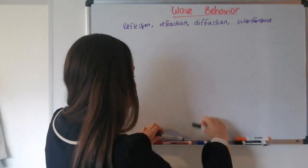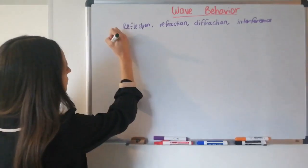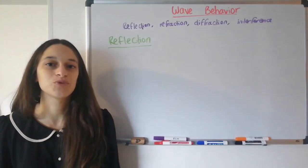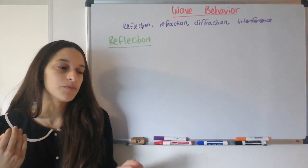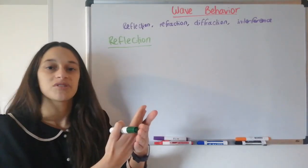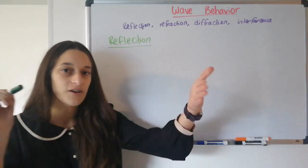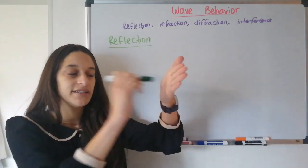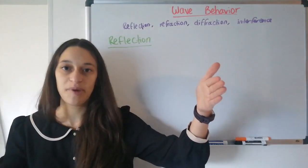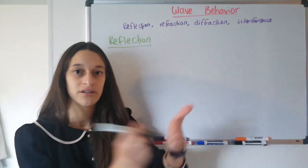Let's start with reflection. Reflection is when a wave hits an obstacle and rebounds from it. It can either hit the obstacle perpendicularly, and that means it will rebound straight back, or it can hit it with an angle, and then it will rebound with an angle.